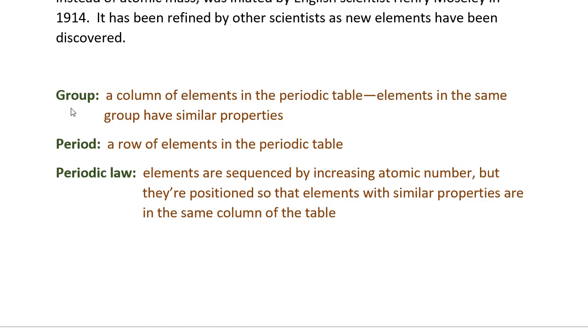Next, periodic law. Elements are sequenced by increasing atomic number, but they're positioned so that elements with similar properties are in the same column of the table. So the elements in the periodic table are not just written in one row that goes out to like 112. Instead, the elements are placed in multiple rows so that elements with similar properties are able to be lined up in columns.